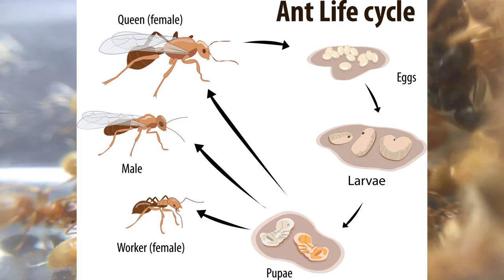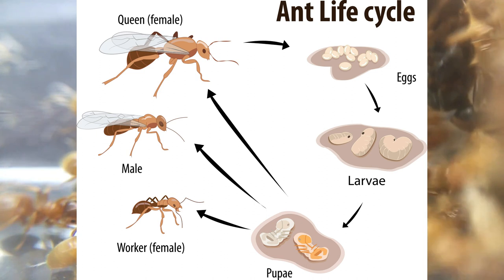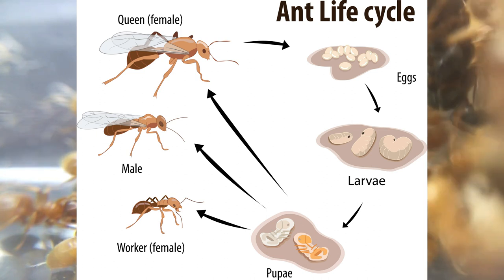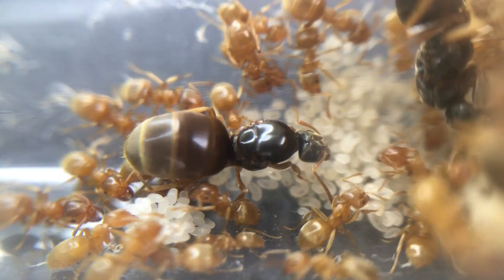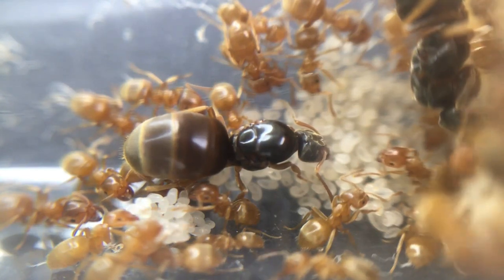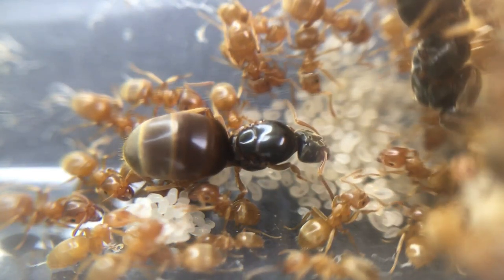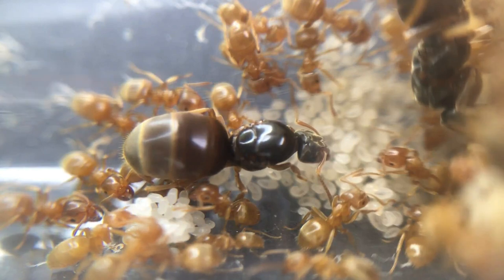The life cycle of ants will start with eggs, then larvae, and then pupae. After the pupae mature, they will turn into one of three castes: workers, males, and queens. Some species of ants even have different castes, ranging from minor, media, major, and supermajor, as well as soldiers.